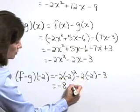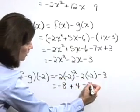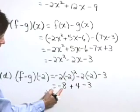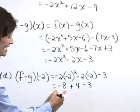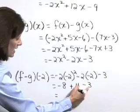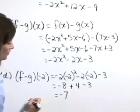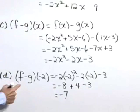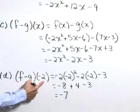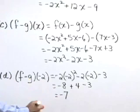Our middle term is a positive 4, lastly, a minus 3. Negative 8 plus 4 is negative 4, and negative 3 gives negative 7. So in part D, f minus g of negative 2 is equal to negative 7.